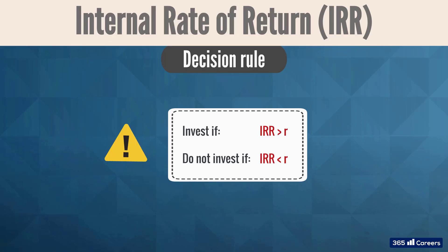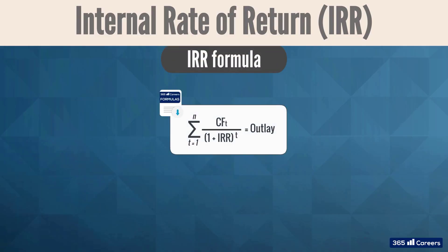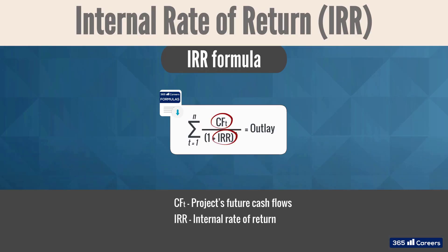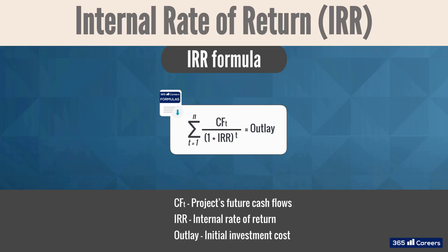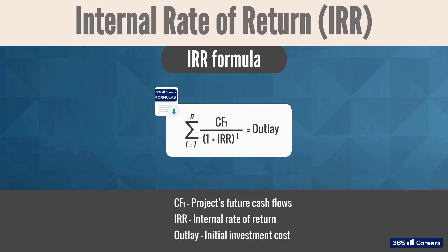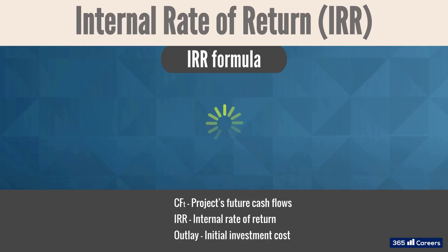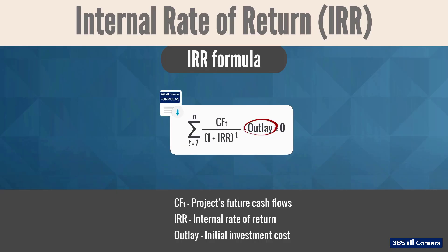Now that we know how to interpret the internal rate of return, it's time to express its formula algebraically. For a project with one investment outflow made initially, on the left side of the equation we have the sum of all cash flows discounted at the IRR, and on the right side we have the initial investment outlay. Let's rearrange the equation: we move the initial outlay to the left side, and now it looks like the NPV formula — the difference being that instead of using the required rate of return, we now have the internal rate of return as the discount factor, and this time we do not know it in advance.